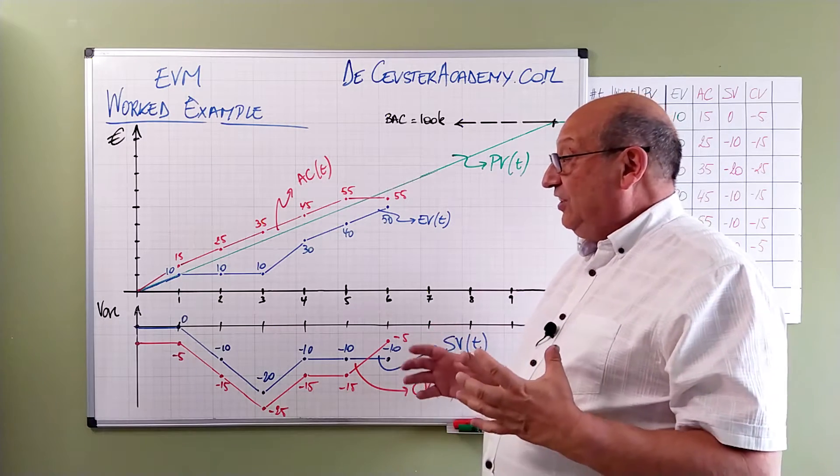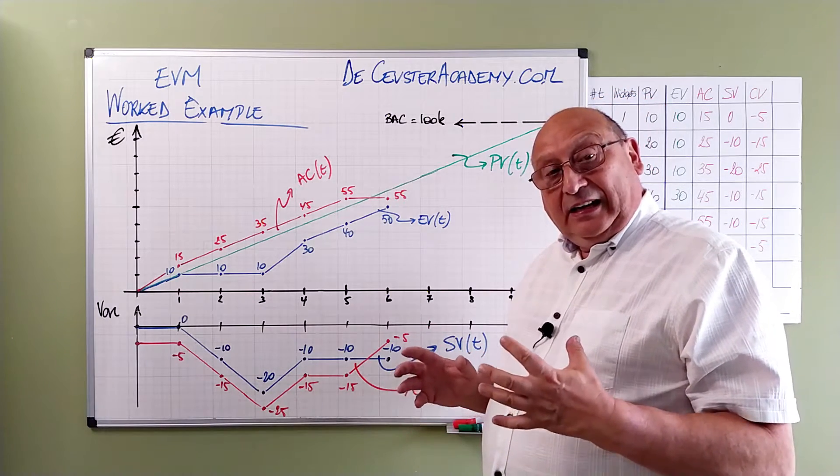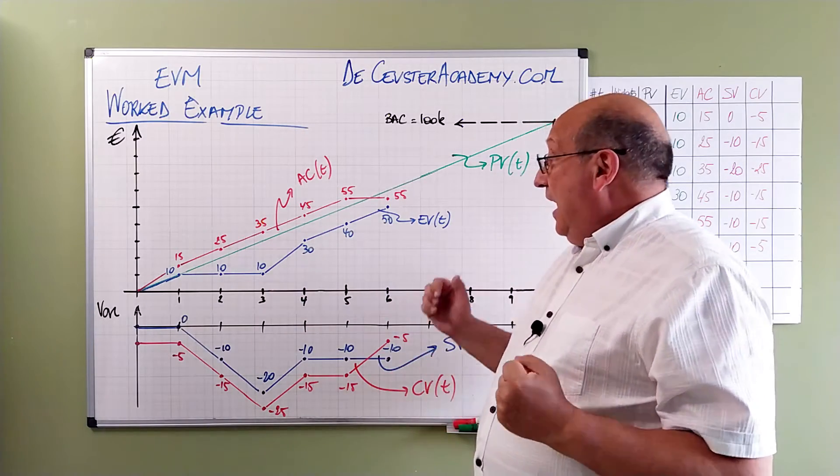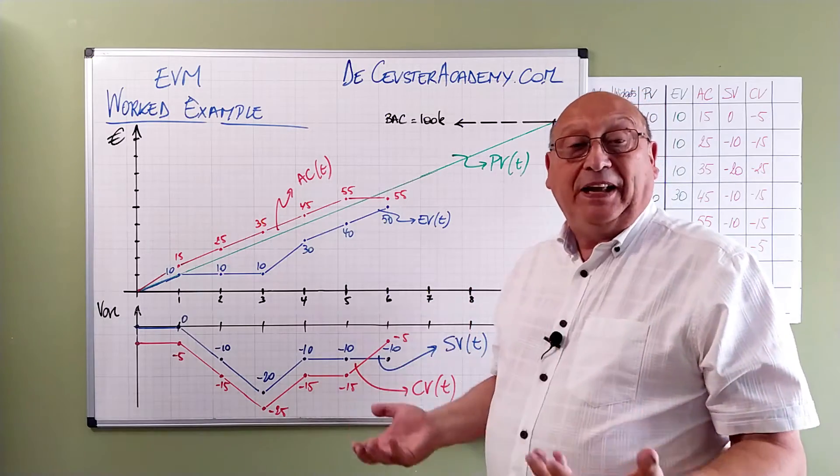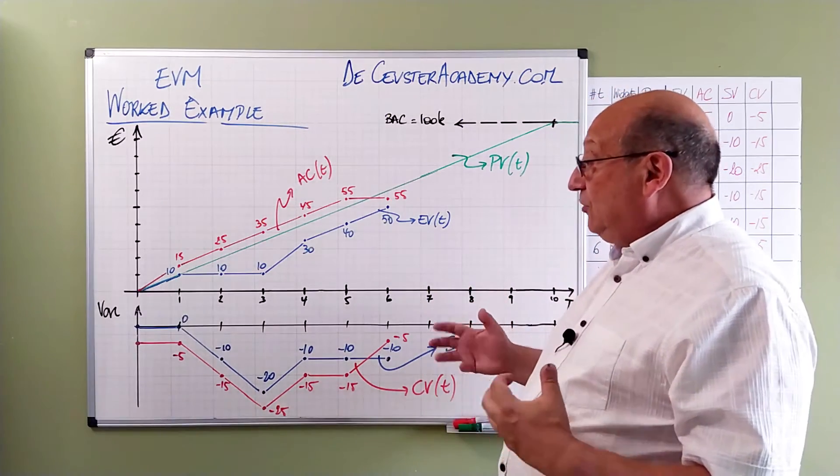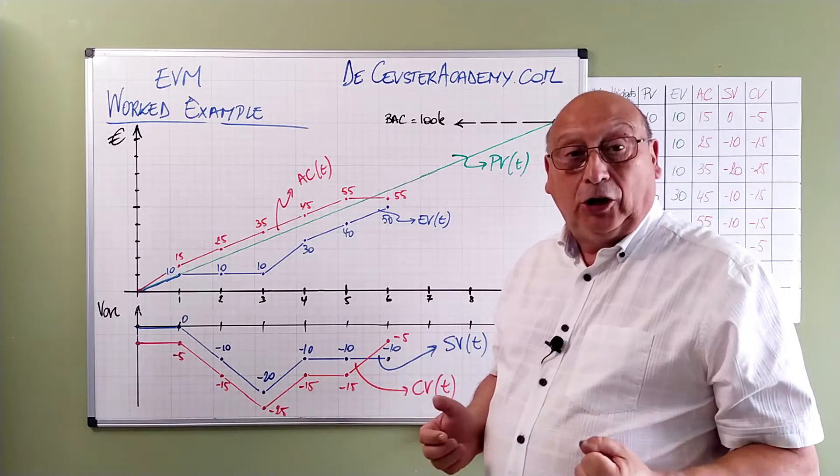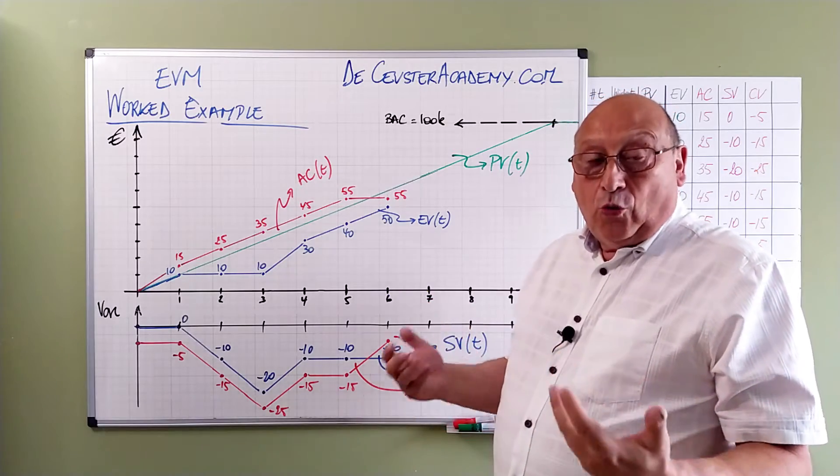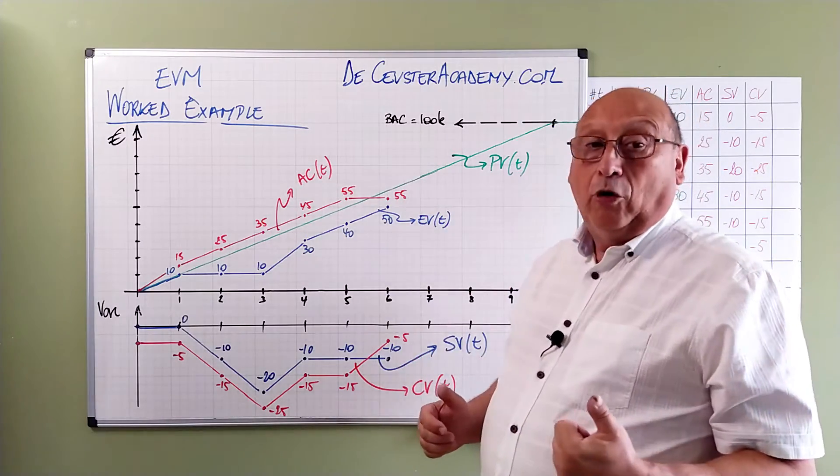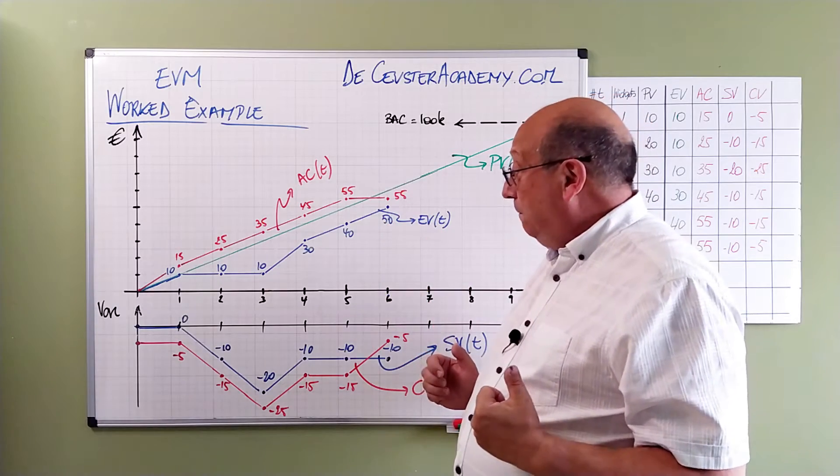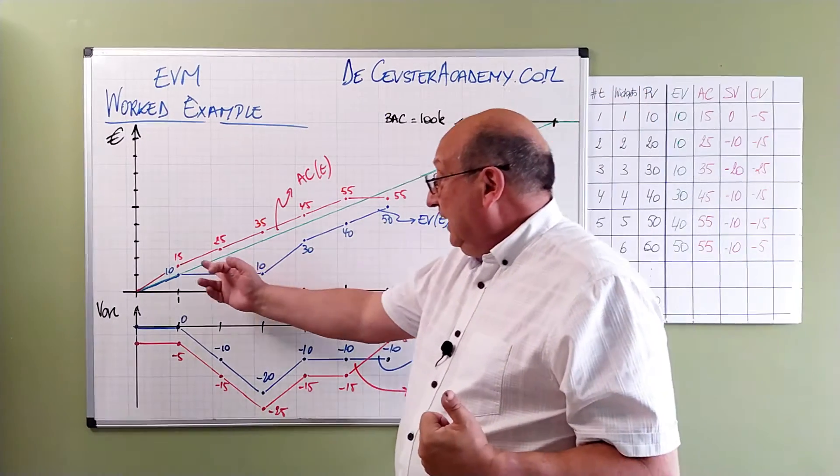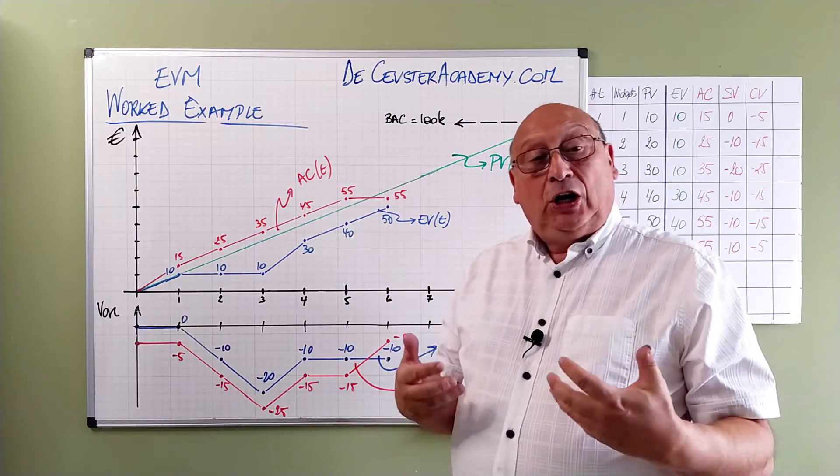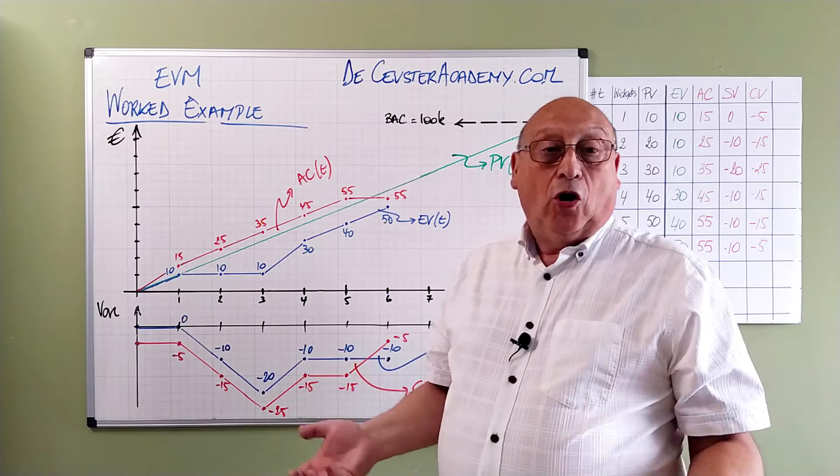But what we clearly can see here is that our project is behind schedule and we are spending more than budgeted. Now in our case if we would look at the classical approach, it would give us the same information. It would say we are spending more money. But like I said we have to compare the two. And we see that the actual cost is above the earned value, which means that we are over budget.